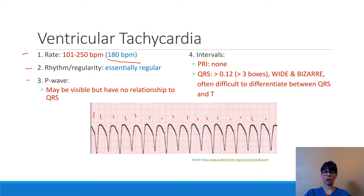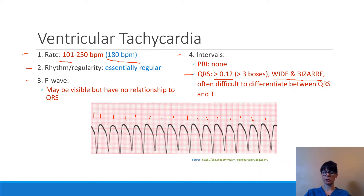The P wave in ventricular tachycardia may be visible but may also have no relationship to the QRS complex. In this case, we can't really determine if there's a P wave hidden in this very fast rhythm. The chances of seeing a P wave are higher if the rate is closer to 101 — the slower the heart rate, the more chance you'll see a P wave. But that's not what's most important here, because this is a ventricular dysrhythmia that can be lethal if we don't intervene quickly. Because there's no visible P wave, there is no PRI. The QRS is greater than 0.12 seconds with a wide, bizarre shape, and it is often difficult to differentiate the QRS from the T wave.